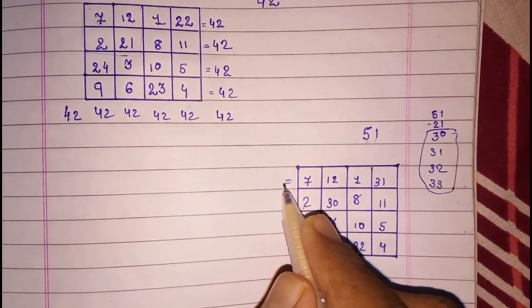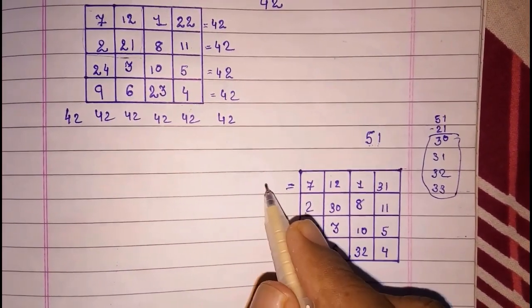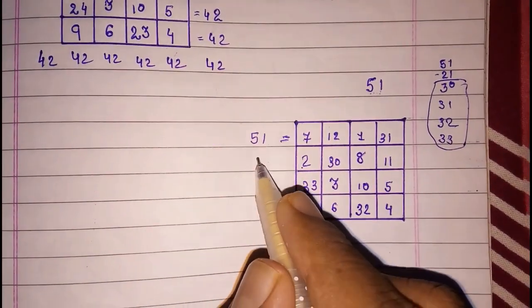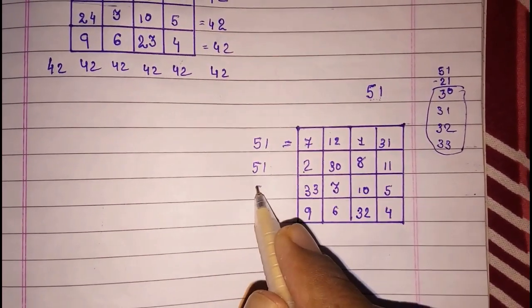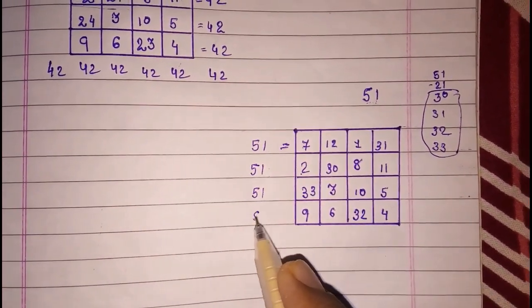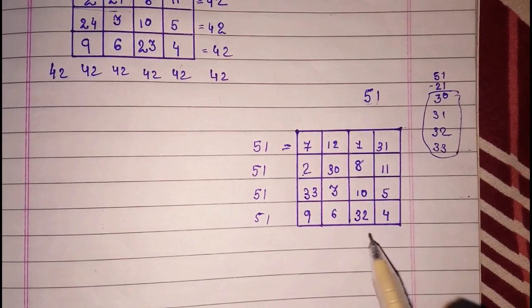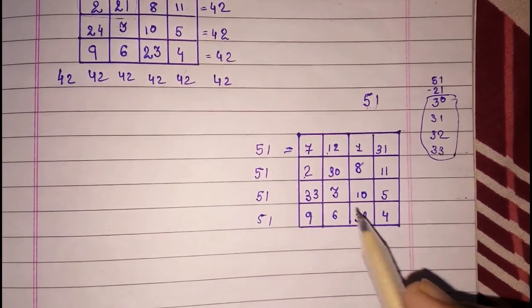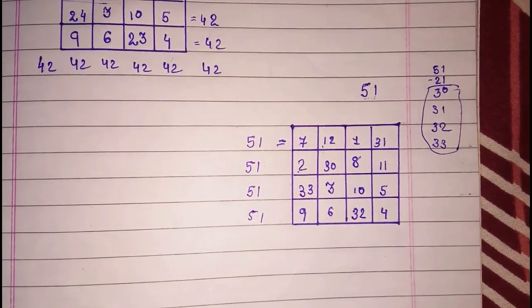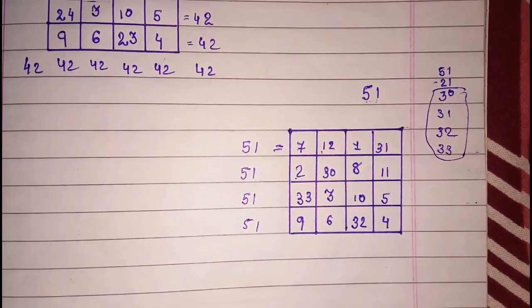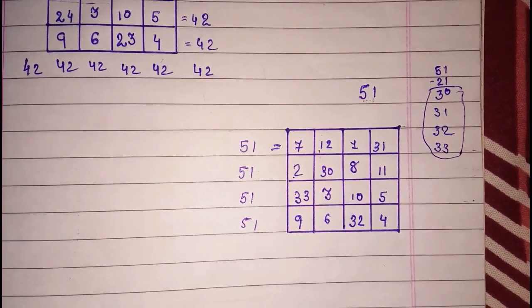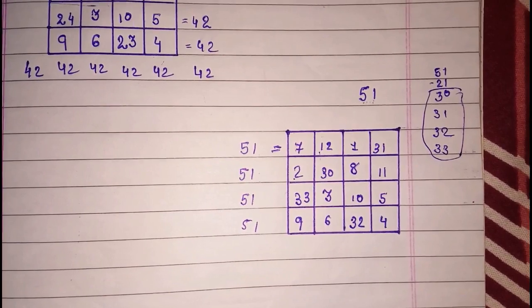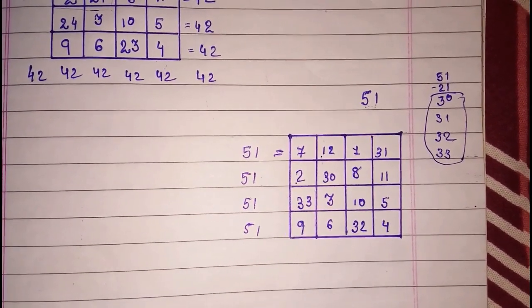Now if you add all numbers you will get the same answer — 51. Here also you will get 51, 51, 51 — horizontally, diagonally, or in any way. Even the sum of all four corner groups will also give you 51. If you like my video please subscribe to my channel and click on the like button. Thank you so much for watching.